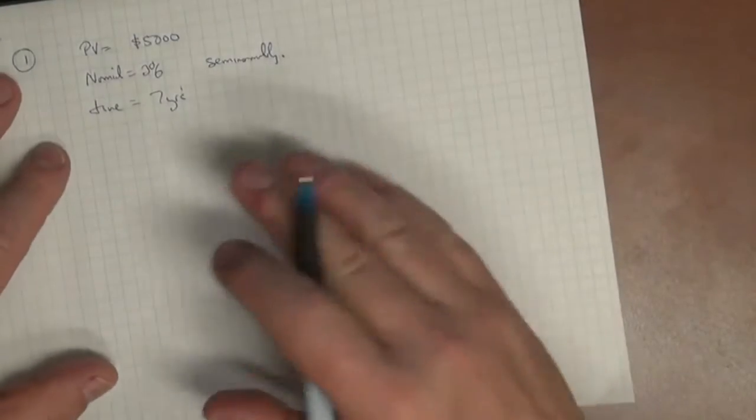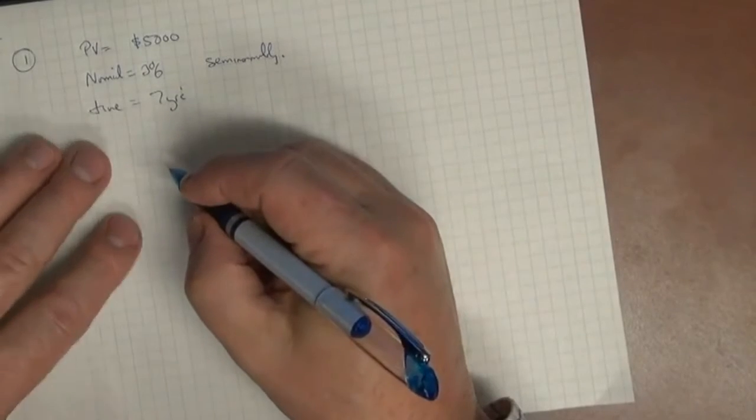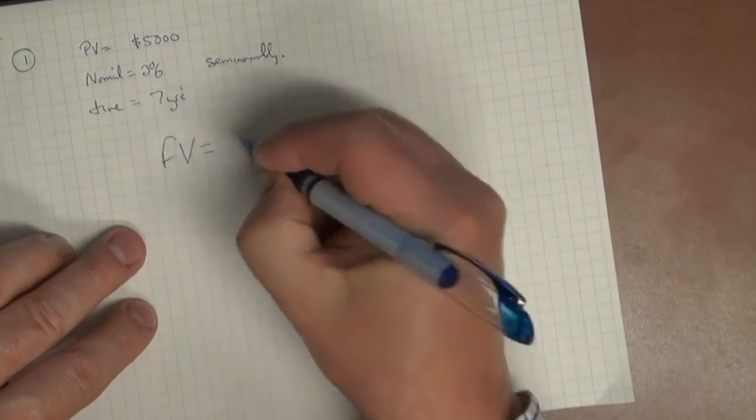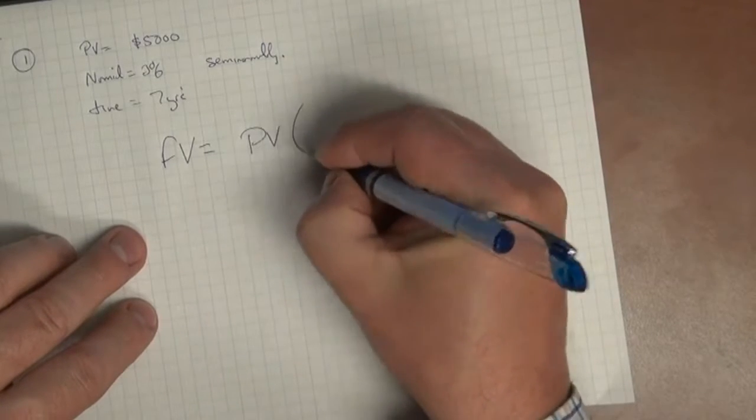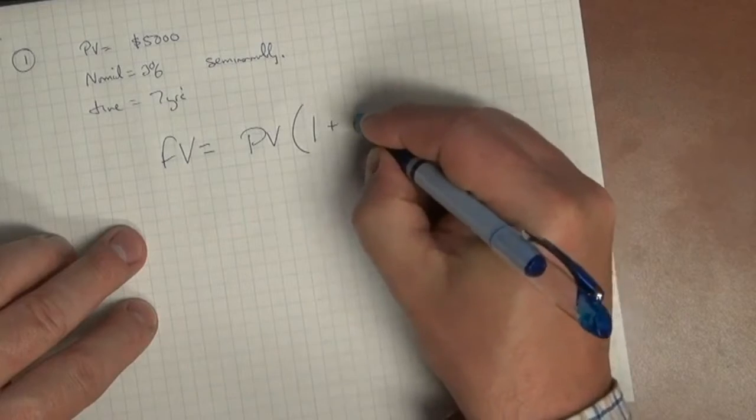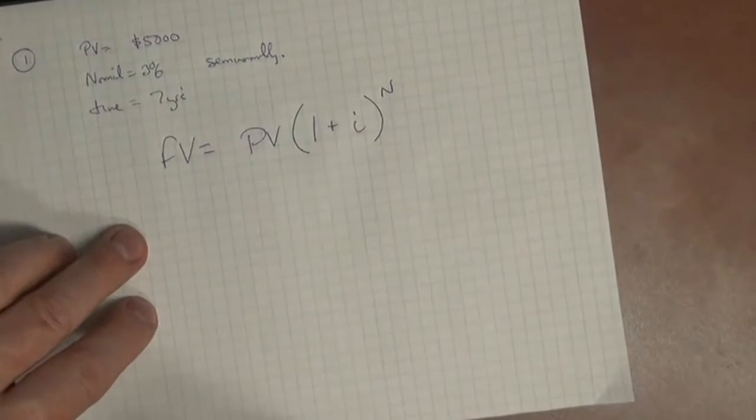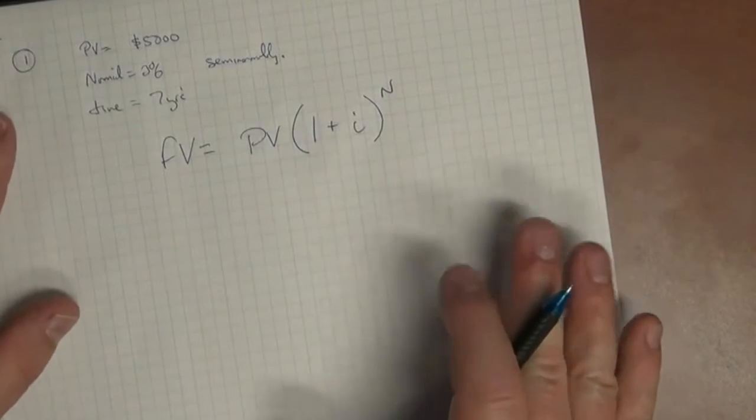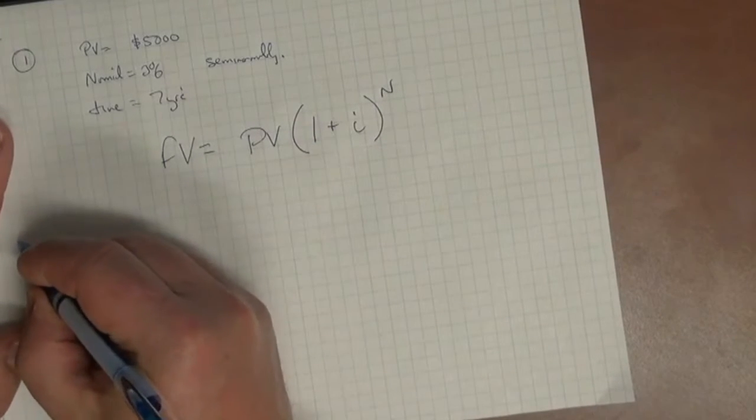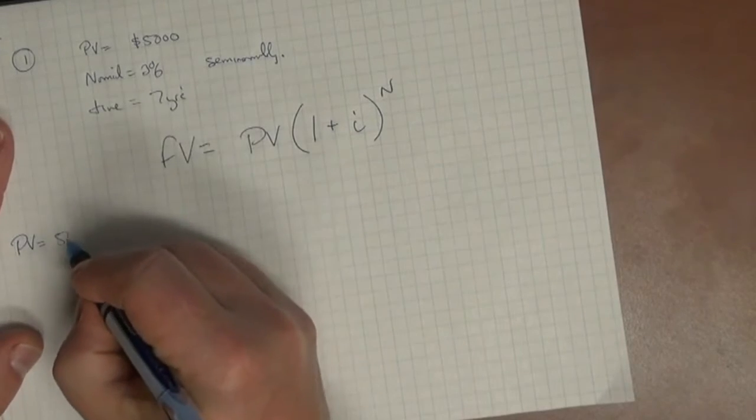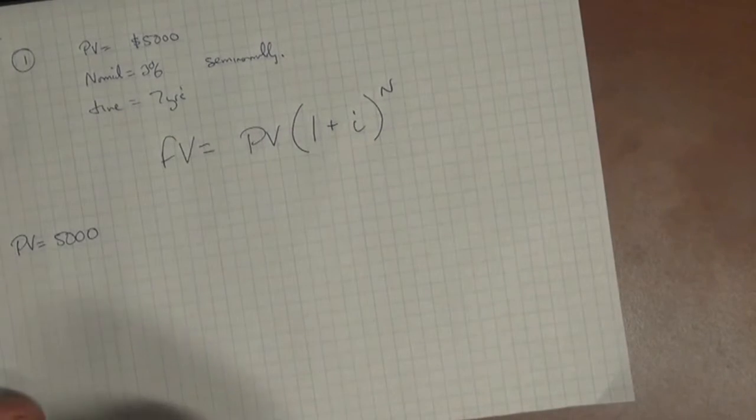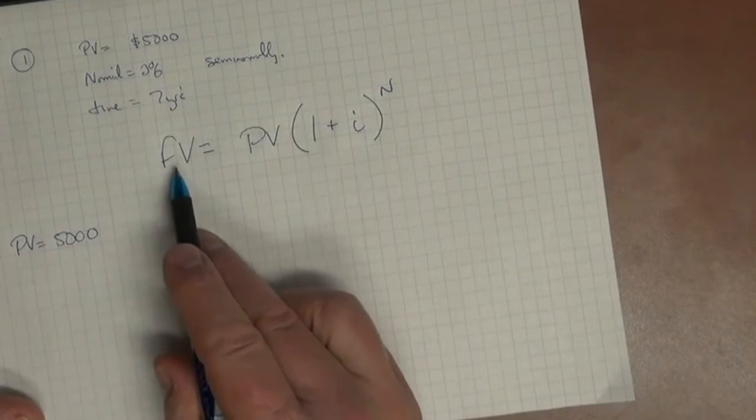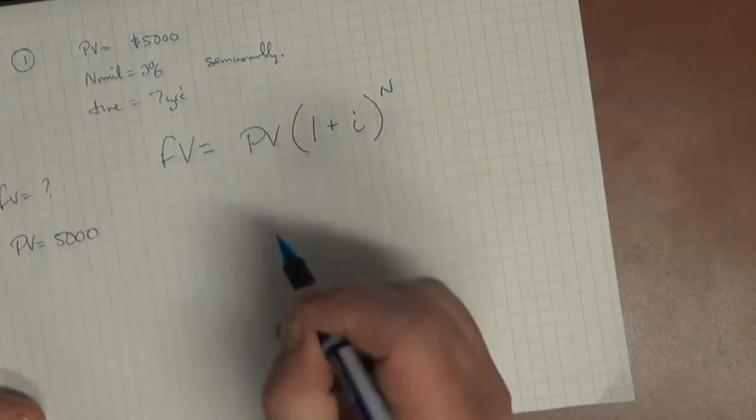So what we need to be able to do is to say, how much is that $5,000 going to be worth in 7 years, given the circumstances where it's 3% rate of interest, and given the circumstances that that interest is compounded semi-annually? Well, the basic equation that we've learned for doing that is the future value equals the present value, 1 plus i to the power of n. Now, we haven't got all of those calculated at first. First, we need to be able to identify what the PV is. We know that present value is $5,000. So that's PV. Then we want to know, we're looking for FV, so we don't know FV, which is the future value.